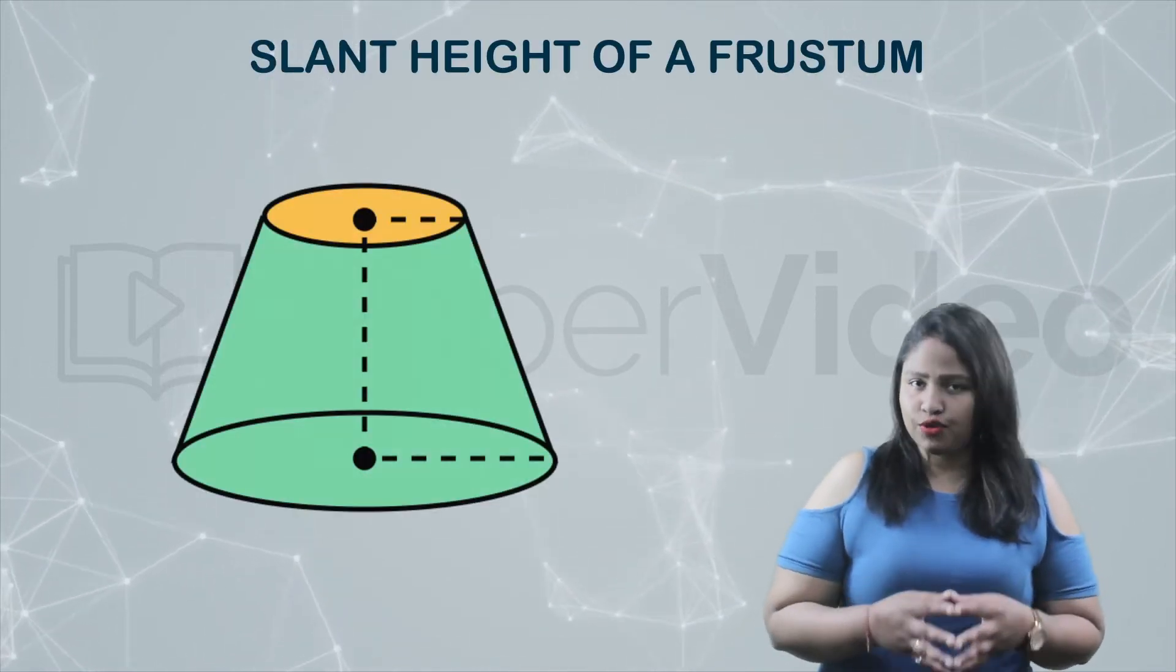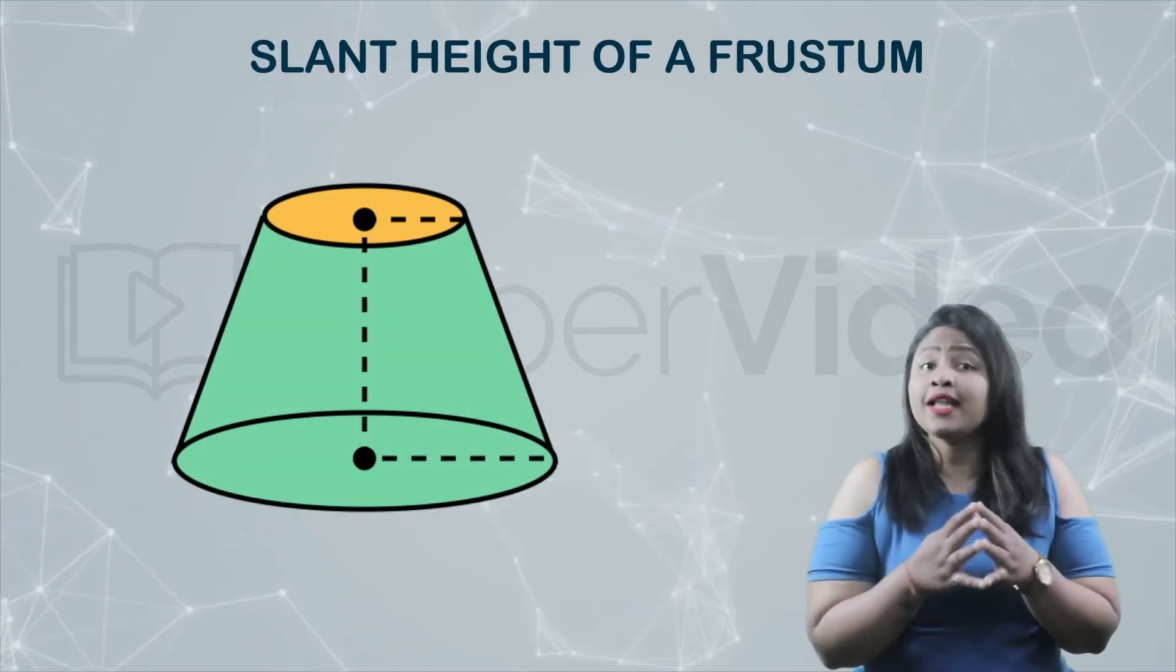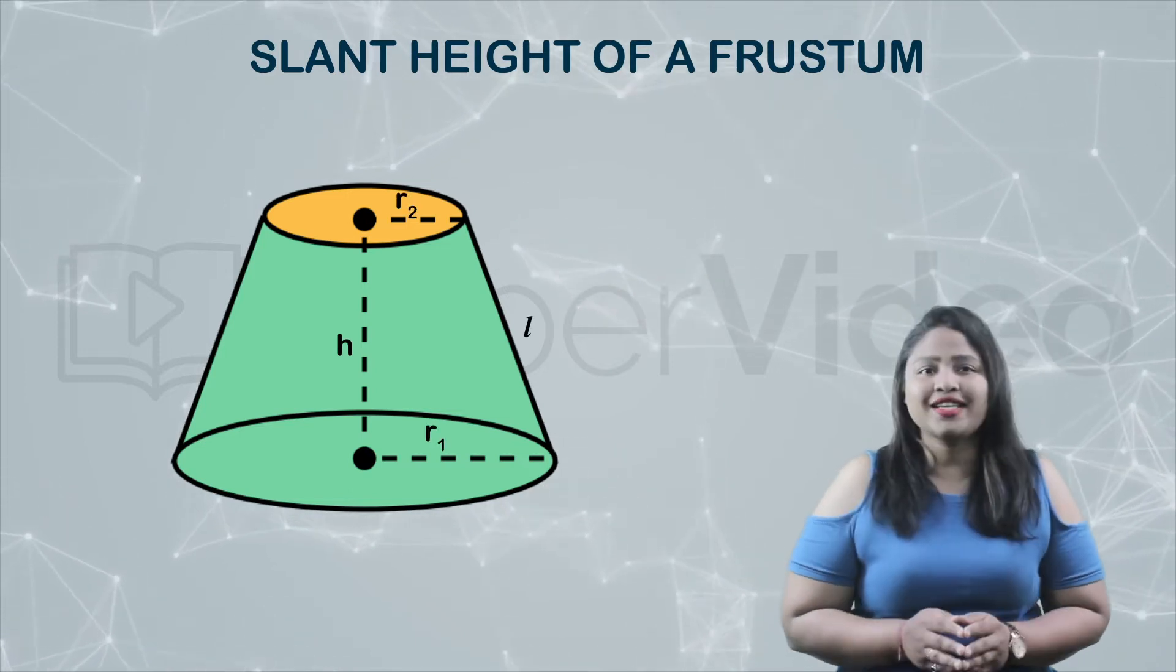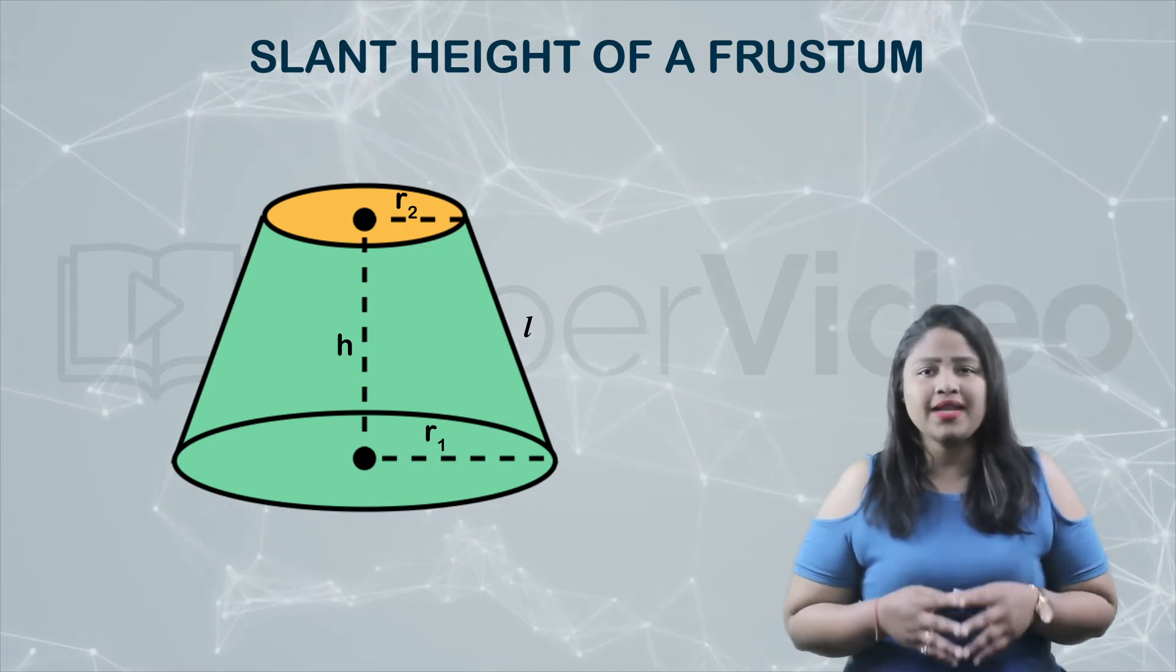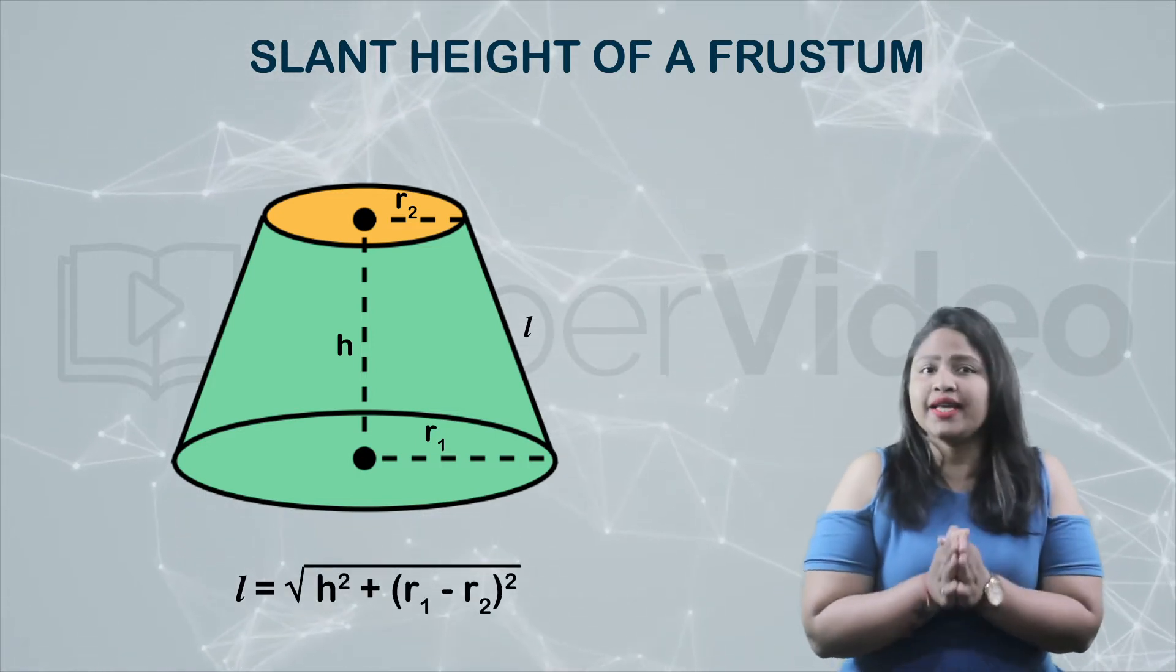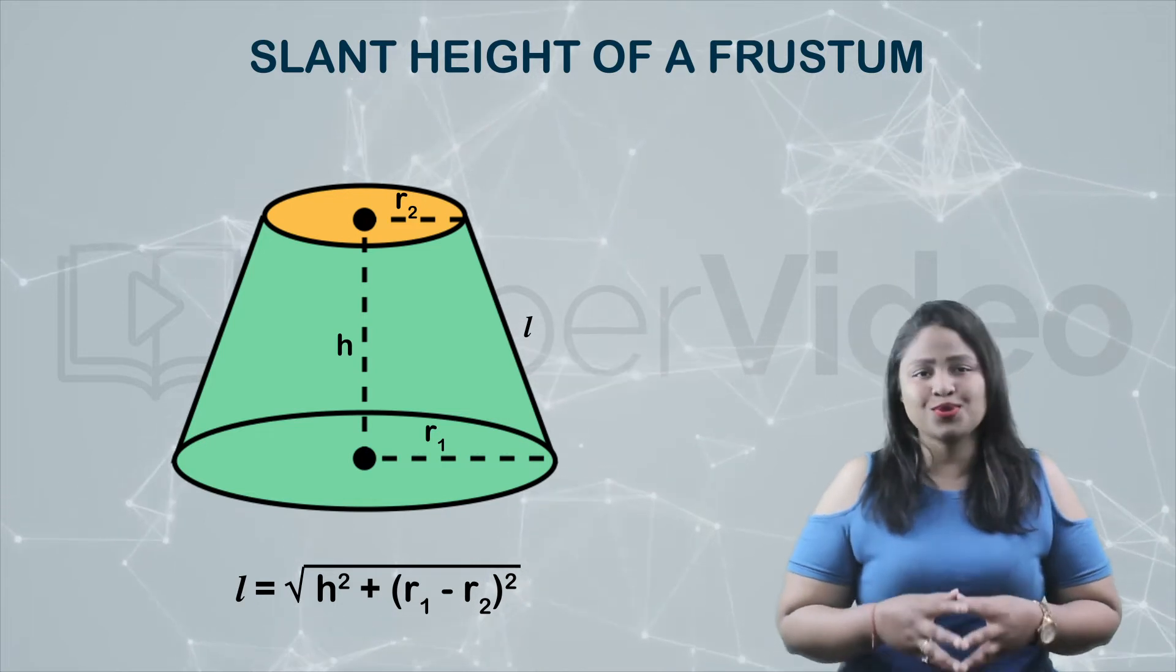In a frustum of a cone, there is a special relationship between height, slant height and the two radii. In this relationship, the slant height of a frustum is given as l equals root h squared plus r1 minus r2 squared.